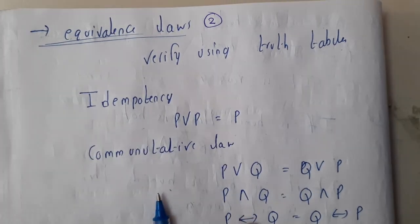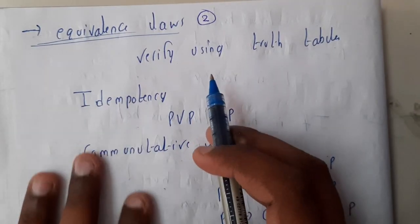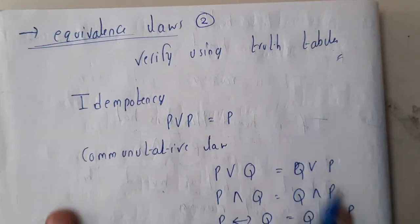So that is the reason why just go through them. You can verify any of these laws by using truth table logic. Just draw truth tables and verify whether they are matching or not.